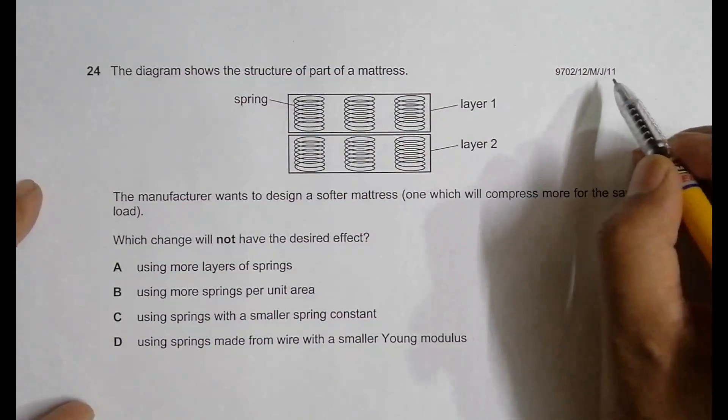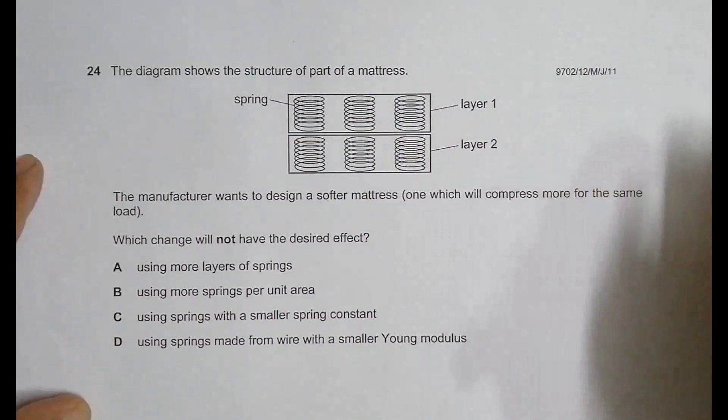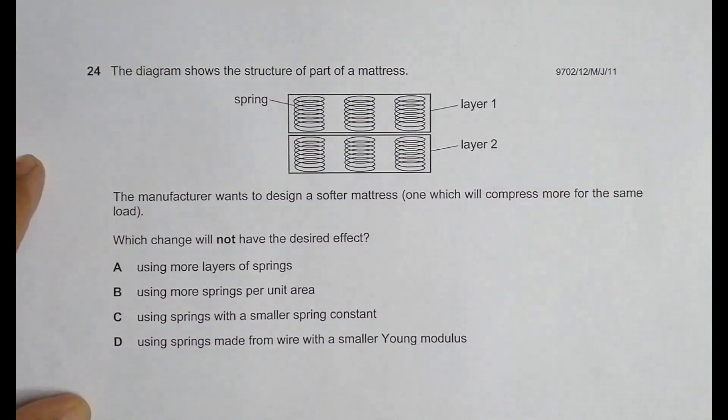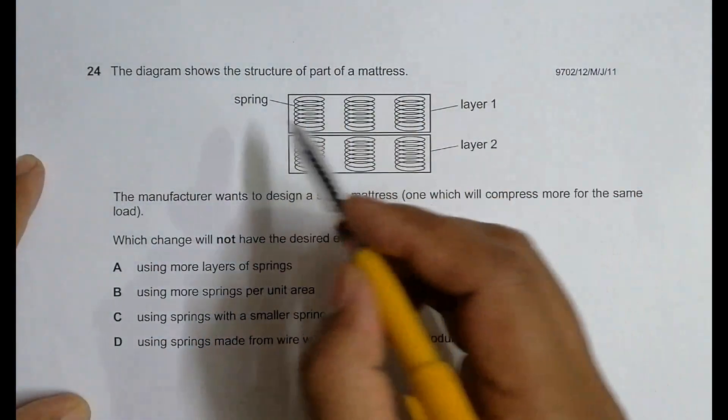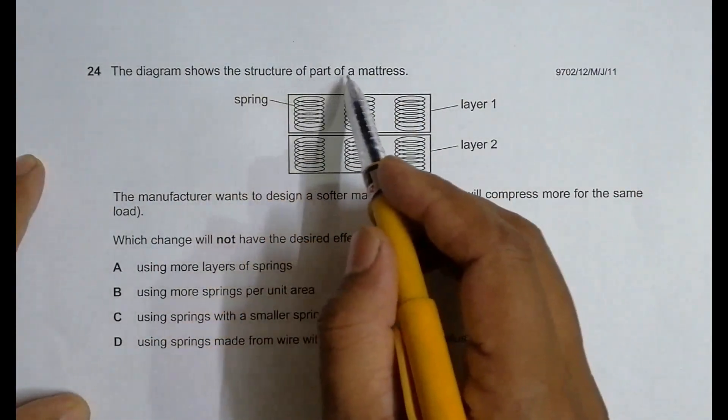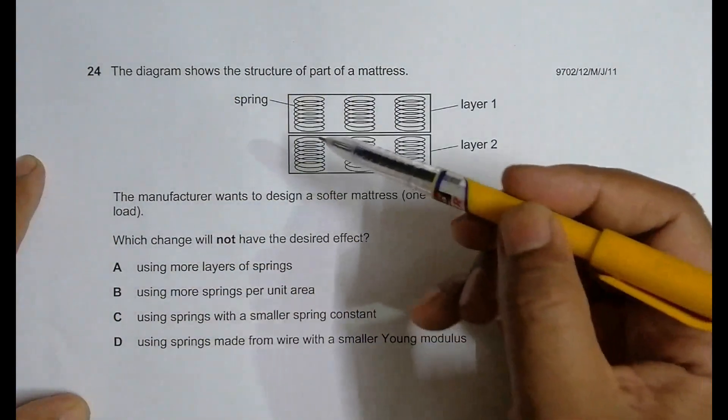Hello folks, this is a 2011 major paper 1-2, question number 24, related to the chapter deformation of solids. As you can see from the question, it's concerned with springs. The diagram shows the structure of part of a mattress.